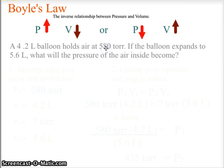Let's look at a sample problem of what a Boyle's Law relationship will look like. Here we have a 4.2 liter balloon holding air at 580 torr. If the balloon expands to 5.6 liters, what will the pressure of the air inside become?